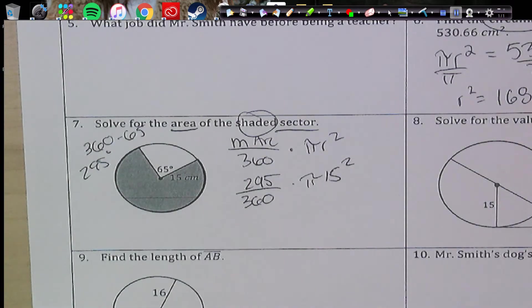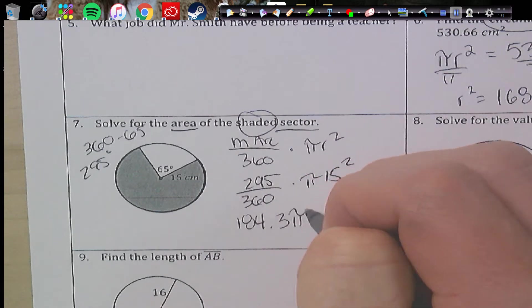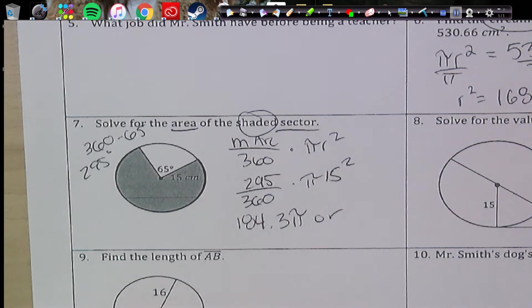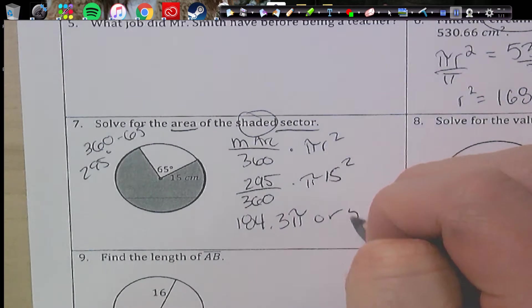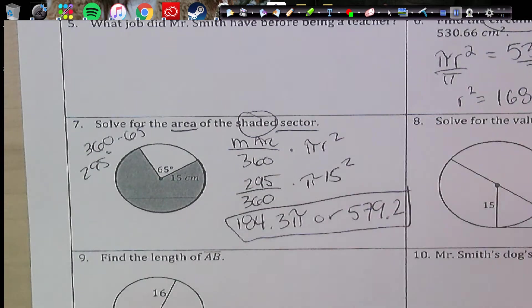So we get 295 over 360 times π times 15 squared. So we've got to just throw in our calculator, and we're going to get either 184.3π, or if you multiply that by π, then you're going to get 579.2. That's your area.